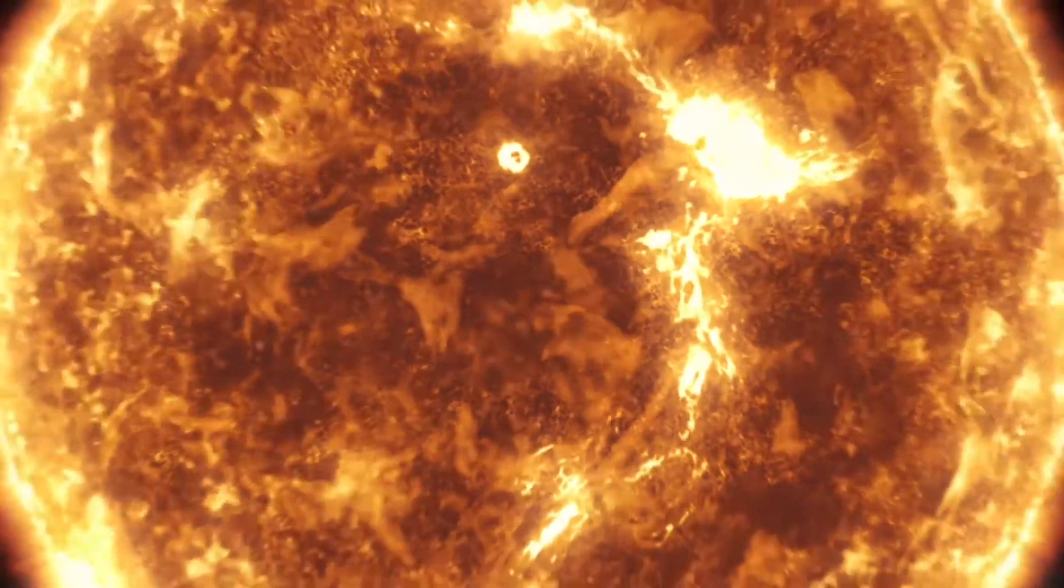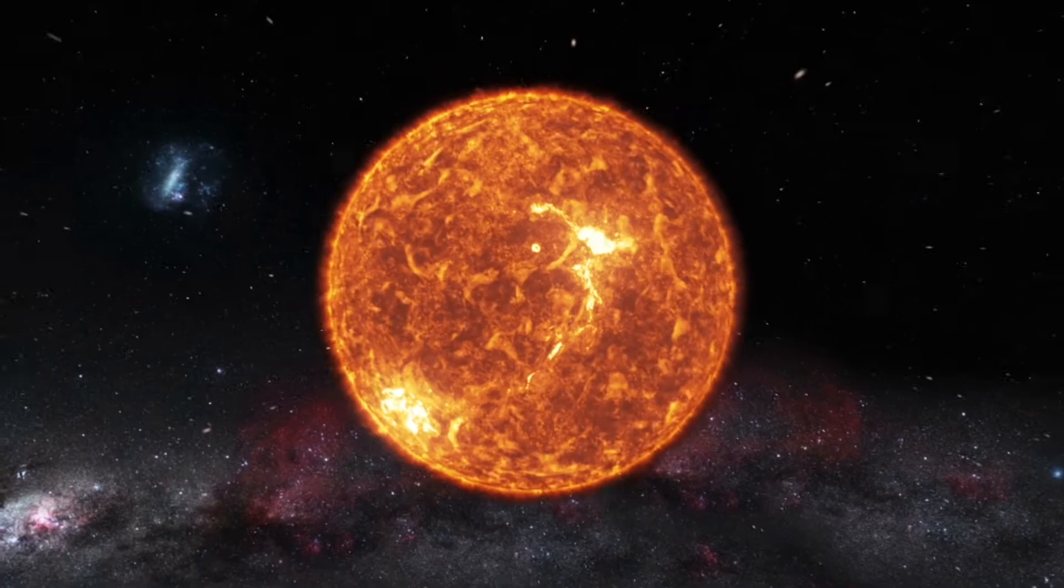7. The heat and energy released from the core of the Sun takes a million years to reach its surface, then just 8 minutes for that energy to reach the Earth.